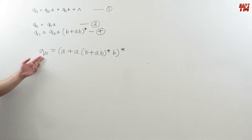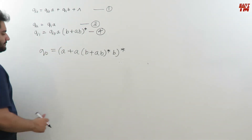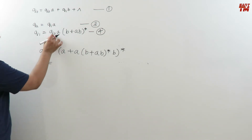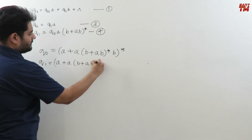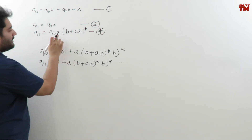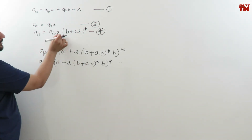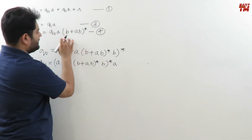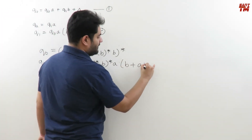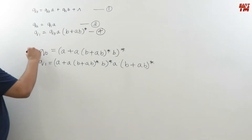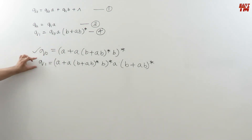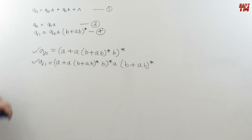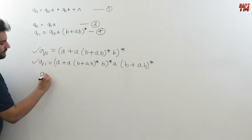Now substitute this q0 into equation 4 to get q1: q1 = q0·a·(b + a·b)*. Replacing q0: q1 = (a + a·b + a·b*·b)* · a · (b + a·b)*. This is our final equation for q1. Now substitute this value of q1 into the state equation of q2 to get the equation of q2.